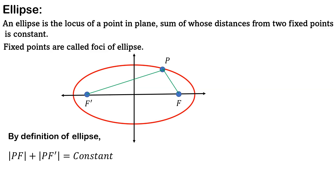By this condition, we get the locus of the point, which is an ellipse. Now we are going to find out the value of this constant. To do so, we draw the vertices of the ellipse, and we move point P to point A and apply the definition of the ellipse.